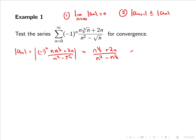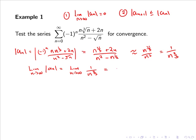This is approximately n^(4/3) over n², which is 1 over n^(2/3). The limit as n goes to infinity of |a_n| is then the limit of 1/n^(2/3), which equals 0. So we have satisfied condition 1.